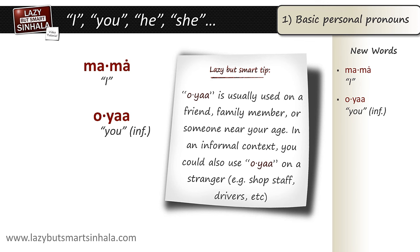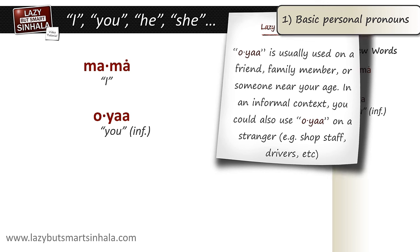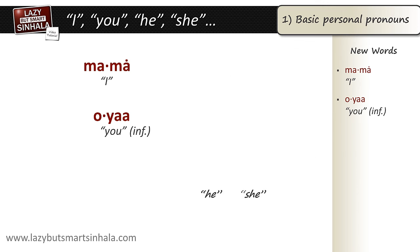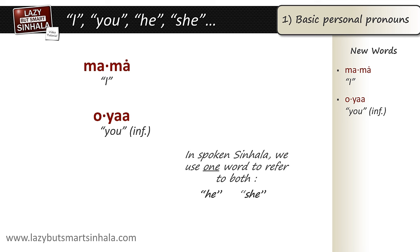You could also use oyaa on a stranger. Let's now look at the words 'he' and 'she.' The good news is that in spoken Sinhala, we only use one word to refer to both he and she, and that word is ea. So remember that ea could mean either he or she. Let's now use these pronouns in sentences in the next section.